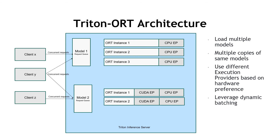For CPUs, we have Microsoft's default CPU execution provider and OpenVINO. For GPUs, we have NVIDIA CUDA and TensorRT. Triton server enables concurrent model execution, which lets you load multiple models or multiple instances of the same model on the same GPU or CPU. Each model instance translates to a session in ONNX Runtime. Concurrent execution helps maximize GPU utilization, enables better performance, and lowers the cost of serving. With ORT as the backend, you can choose the best accelerator as an execution provider based on the target hardware. Another key feature is dynamic batching, where clients can send independent requests and Triton will group these into a single batch to increase GPU throughput.